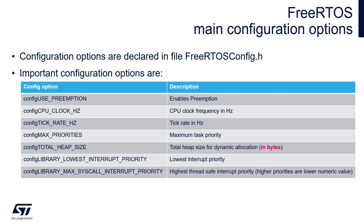All of the settings have their default values, which are correct for a simple system. Config CPU clock hertz is configured automatically based on the clock configuration of the MCU. Tick rate is configured to 1 kHz, which is the most commonly used value. Total heap size is the size of the RAM memory dedicated to the operating system. Please notice that the total heap size is given in bytes, while the stack size for a particular task is given in words.